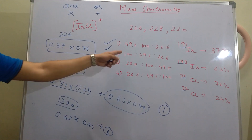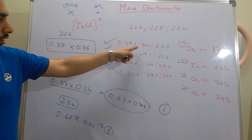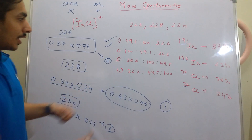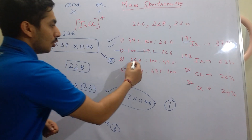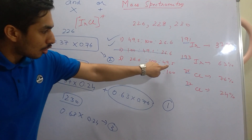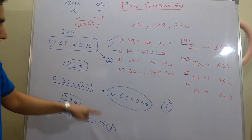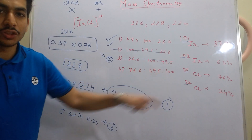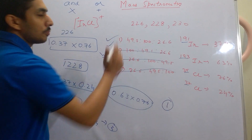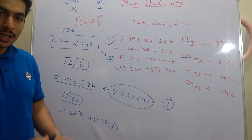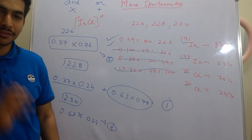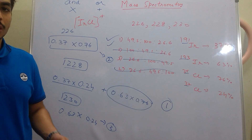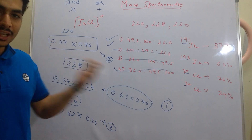Looking at the answer options, only one satisfies the condition that m/z = 228 has the highest intensity, m/z = 226 has the second highest, and m/z = 230 has the lowest. The other options either give 226 or 230 the highest intensity, which contradicts our calculation. Therefore, the correct answer is option one. To crack this exam you need both smart work and conceptual knowledge simultaneously.